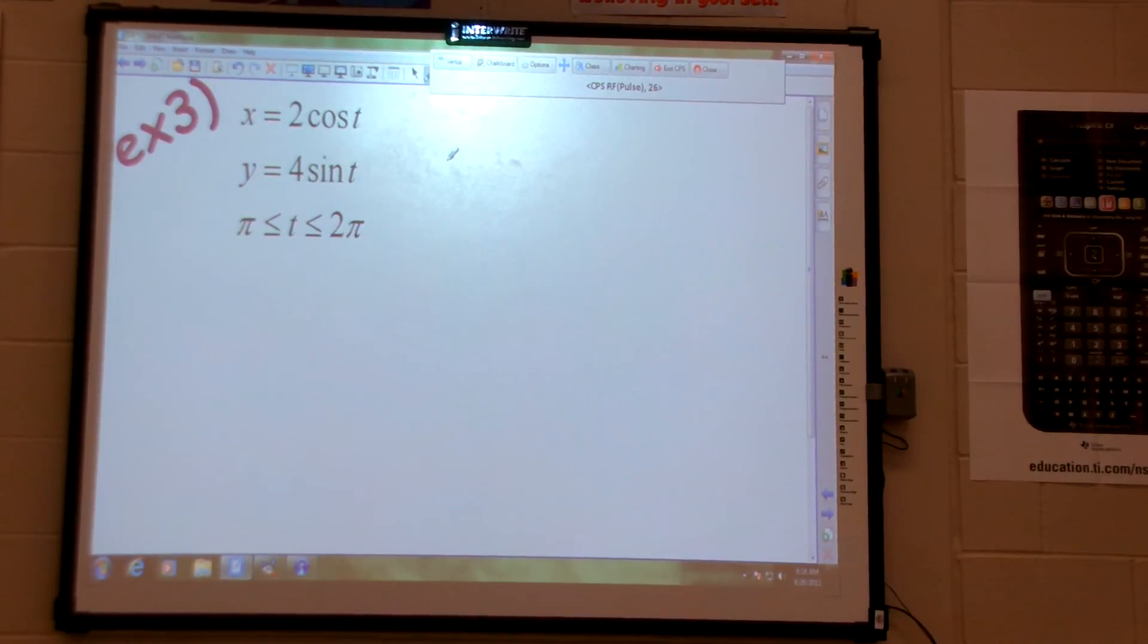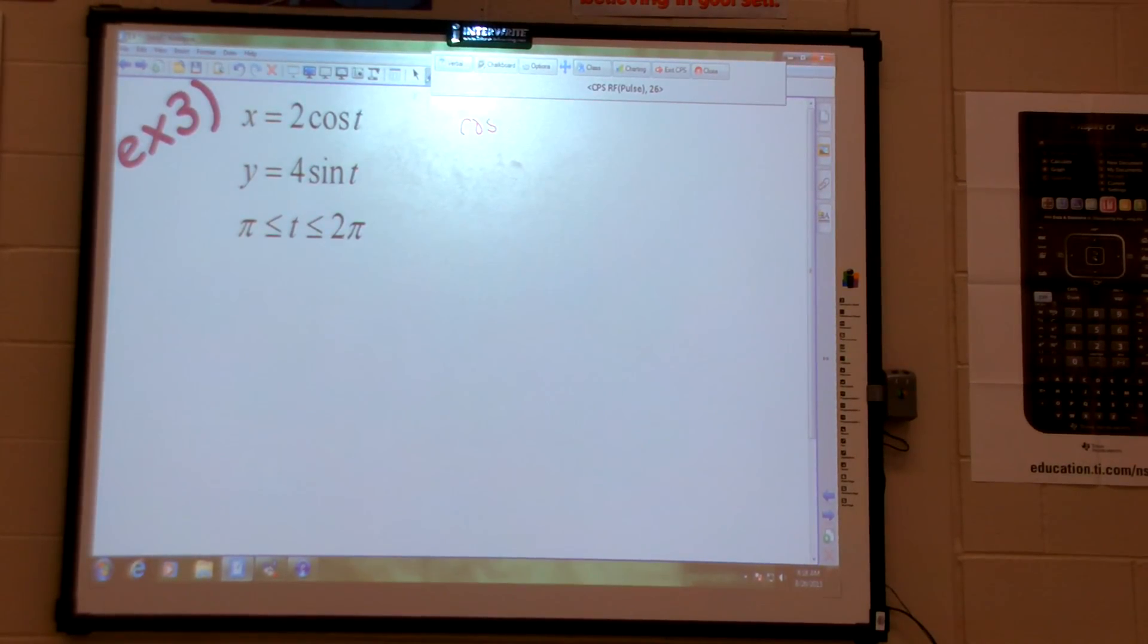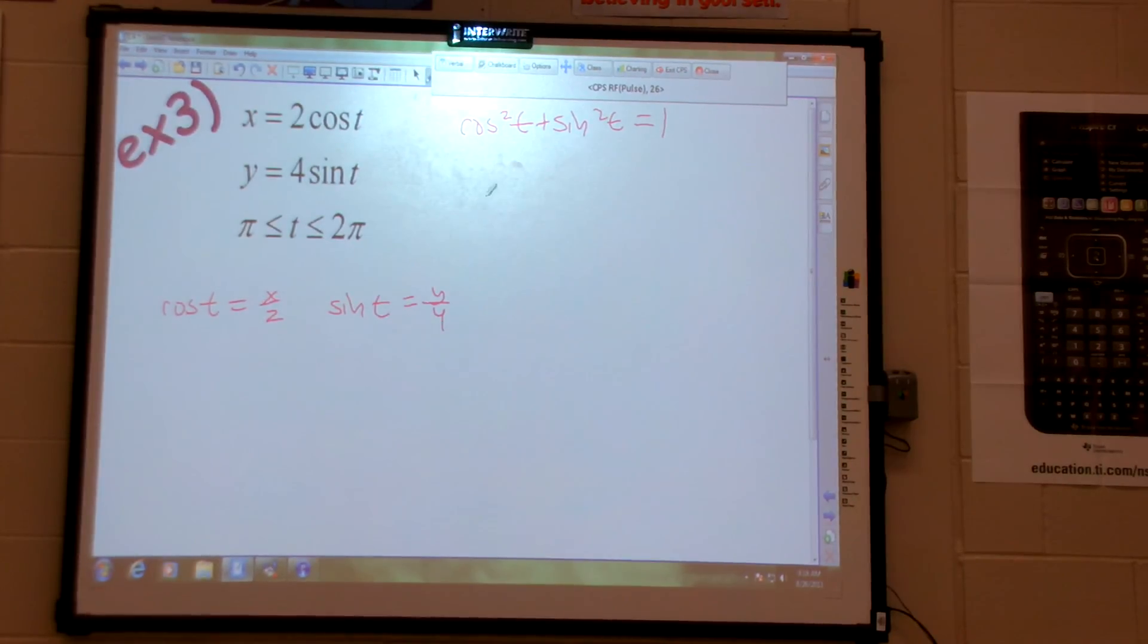So we're going to do the same thing. I know that cosine squared plus sine squared equals 1. So cosine equals x over 2. Sine equals y over 4. So still the process is the same. x over 2 squared plus y over 4 squared. So I get x squared over 4 plus y squared over 16.